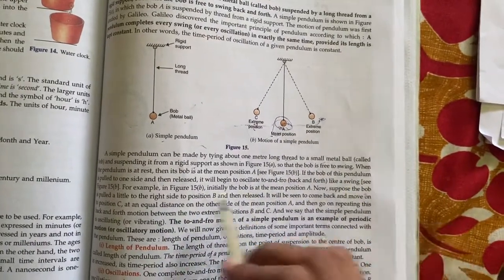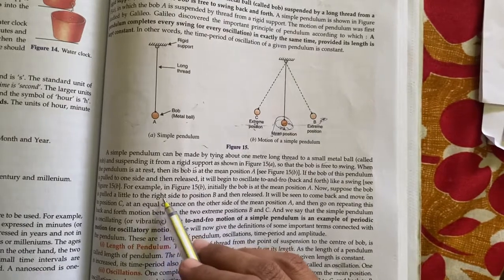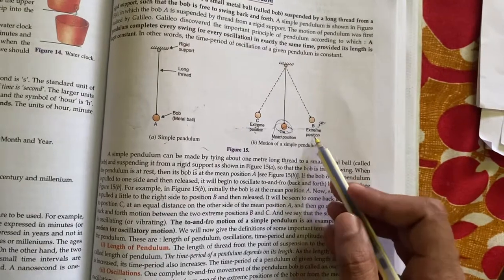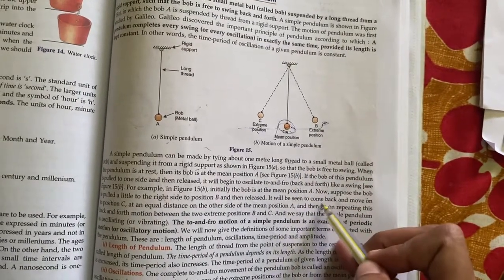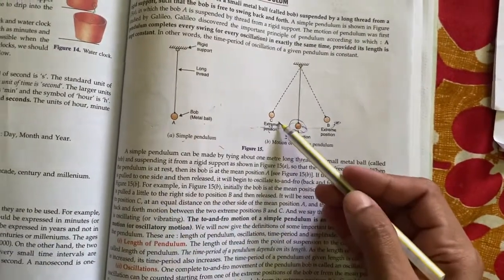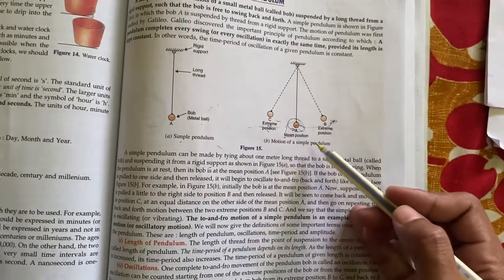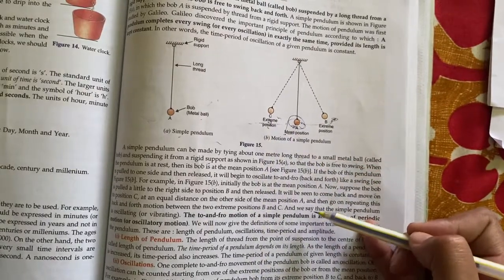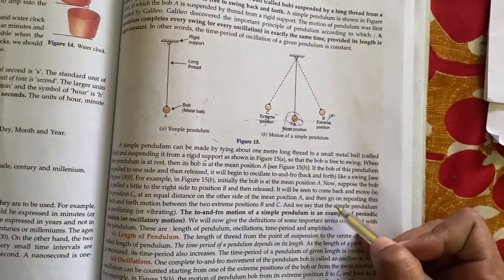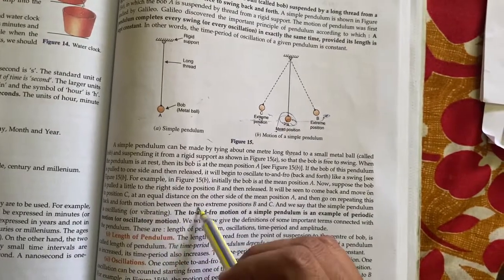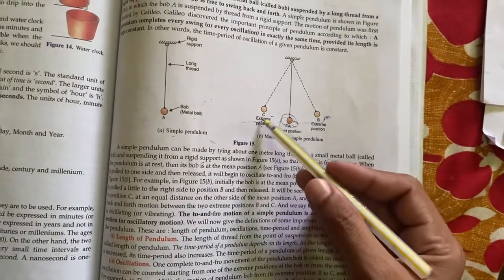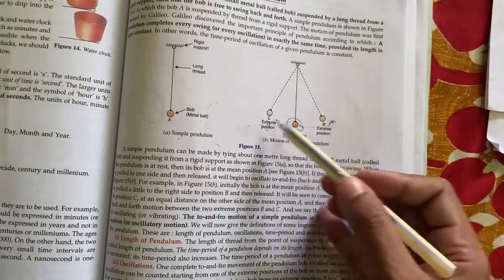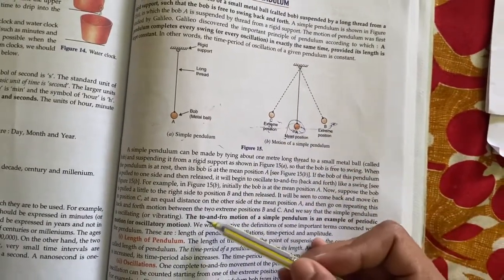Now suppose the bob is pulled a little to the right side to position B. Then at least it will come back and move to position C at an equal distance on the other side of mean position. Then it goes on repeating back and forth motion between two extreme positions. Back and forth movement, to and fro motion of simple pendulum, is an example of periodic motion.